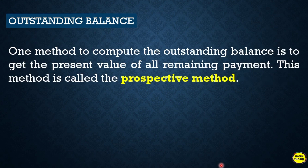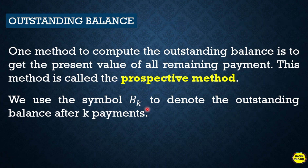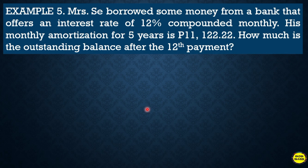Outstanding balance: one method to compute the outstanding balance is to get the present value of all remaining payments. This method is called the prospective method. We use the symbol B_k to denote the outstanding balance after k payments. Different books may use different representations for outstanding balance.